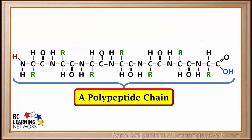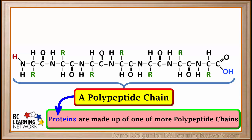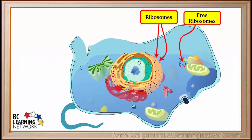A large number of amino acids bonded together form a polypeptide chain. Polypeptide chains can get very large and can contain hundreds or even thousands of amino acids. Proteins are made up of one or more polypeptide chains. Proteins are synthesized in the ribosomes found in our cells and in the cells of other animals, and they're also made by plants.